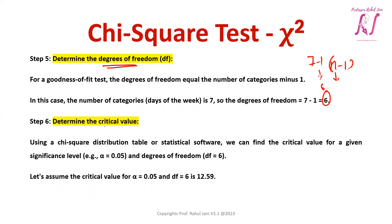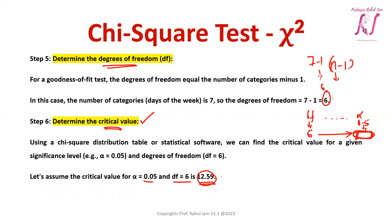Next we determine the critical value, which is found using a chi-square table. With a degree of freedom of 6 and a significance level (alpha) of 0.05, we look up the table at df = 6 and α = 0.05. The critical value from the chi-square table is 12.59.